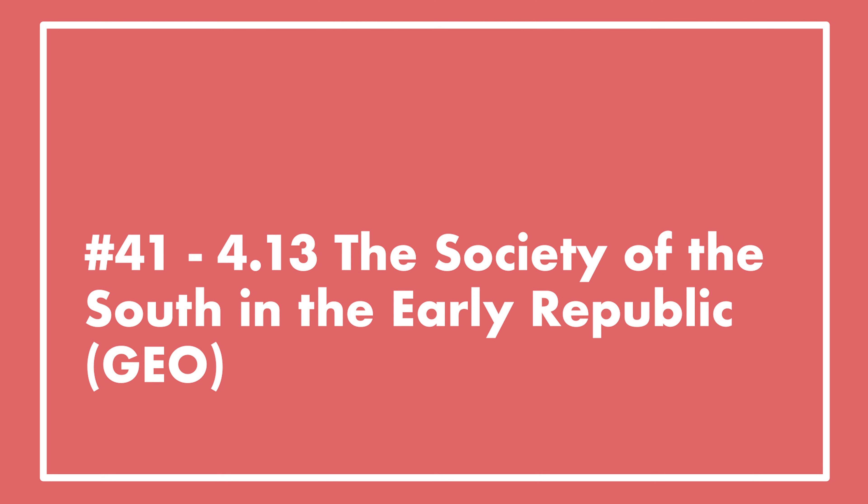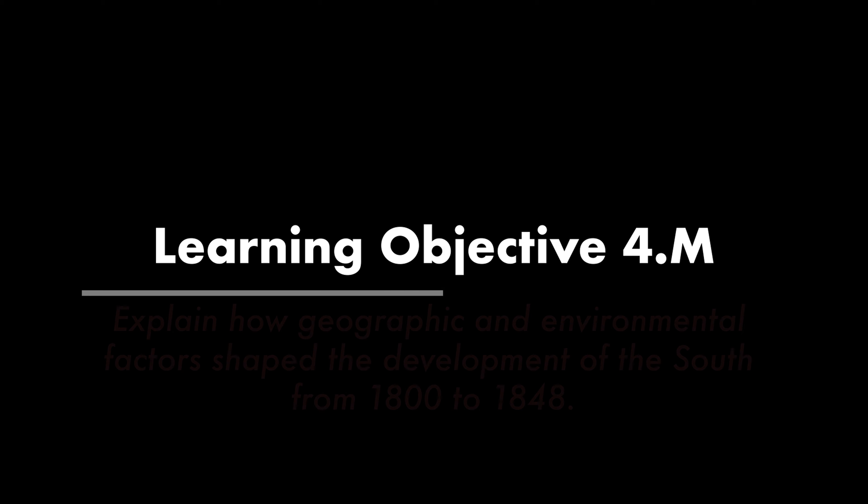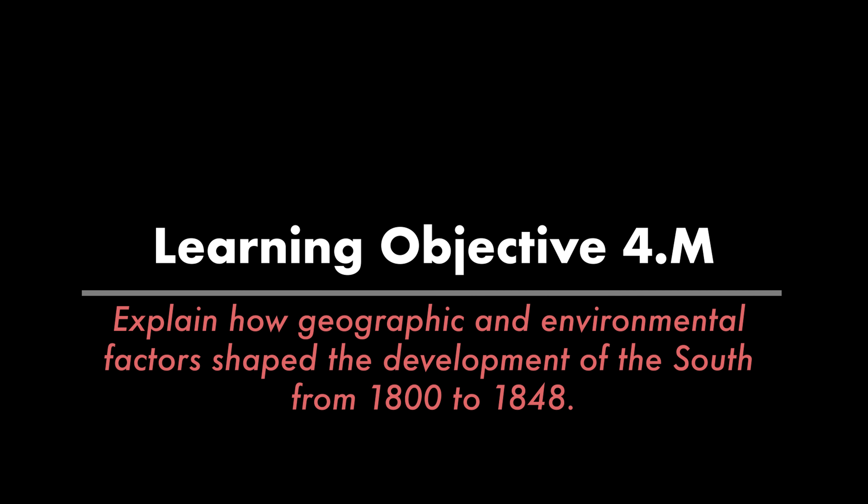Welcome to lecture number 41. This is topic 4.13, The Society of the South in the Early Republic. This is the last historical topic before we do a big roundup of the entire historical period. The theme for this topic is geography and the environment. The learning objective is to explain how geographic and environmental factors shaped the development of the South from 1800 to 1848.